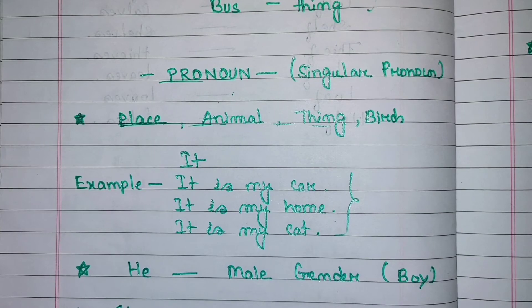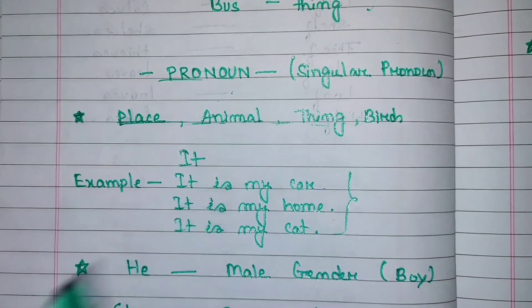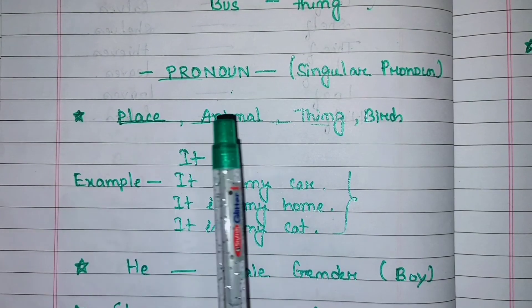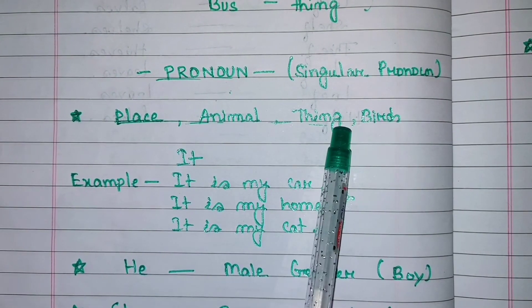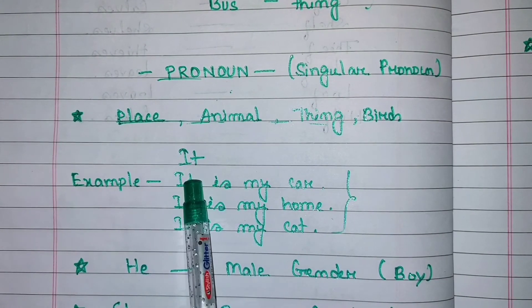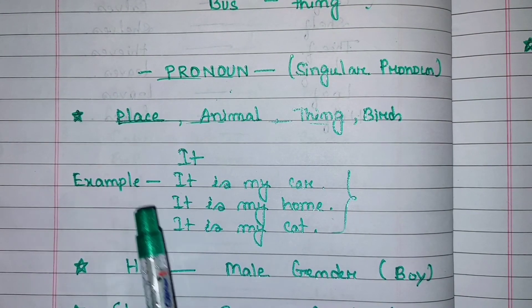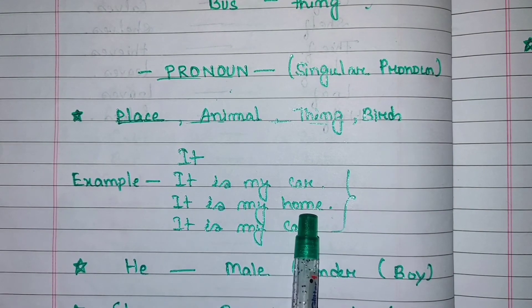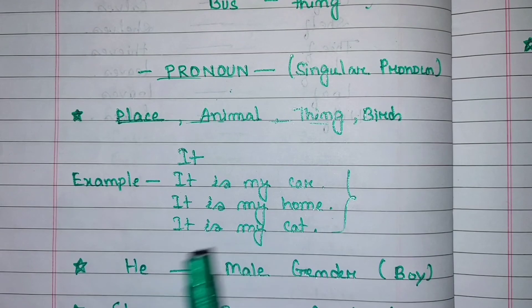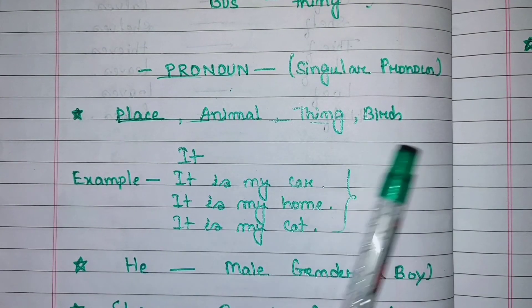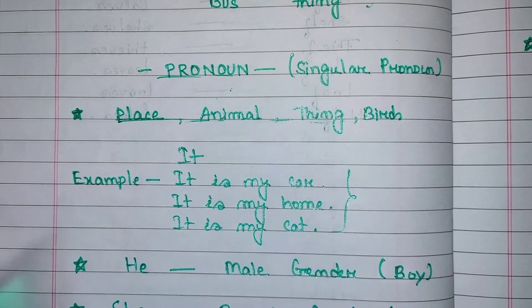Let's see that pronoun - singular pronoun. Place, animal, thing, birds - for these we use pronoun it. Example is: It is my car. It is my home. It is my cat. Place, animal, thing, birds - for these we use singular pronoun it.